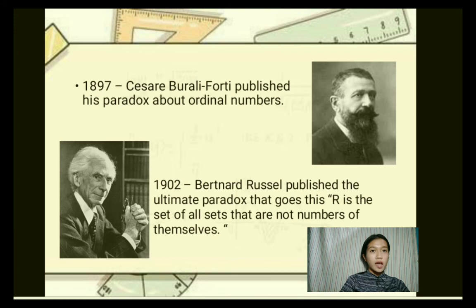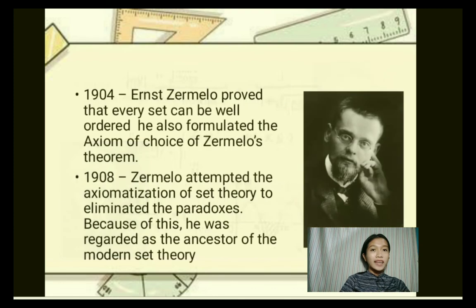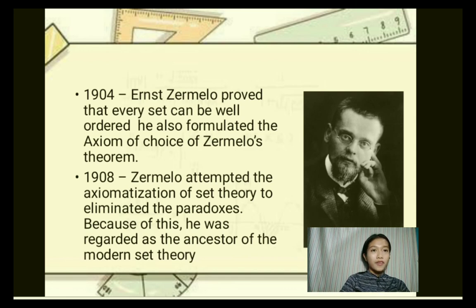In 1897, Cesare Burali-Forti published his paradox about ordinal numbers. In 1902, Bertrand Russell published the ultimate paradox: R is the set of all sets that are not members of themselves. In 1904, Ernst Zermelo proved that every set can be well-ordered, and he also formulated the axiom of choice, known as Zermelo's theorem. In 1908, Zermelo attempted the axiomatization of set theory to eliminate the paradoxes, and because of this, he was regarded as the ancestor of modern set theory.